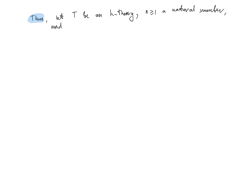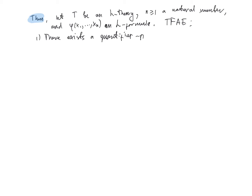Assume that phi of x1 through xn is an L-formula. Then the following two properties are equivalent. Property one: there exists a quantifier-free formula in the language L, say psi of x1 through xn, such that phi and psi are equivalent in the theory T.